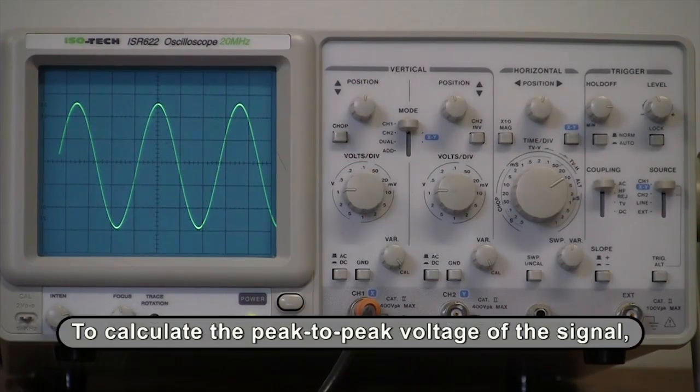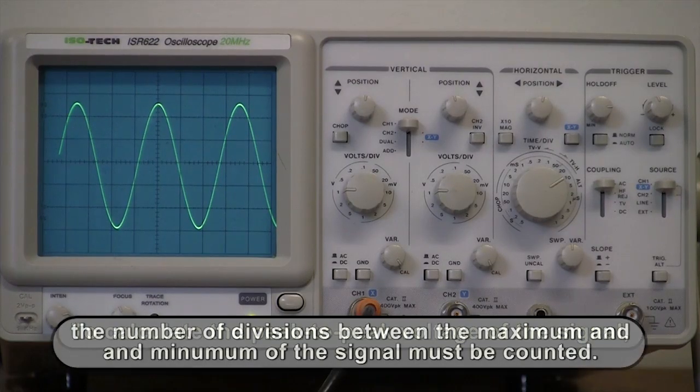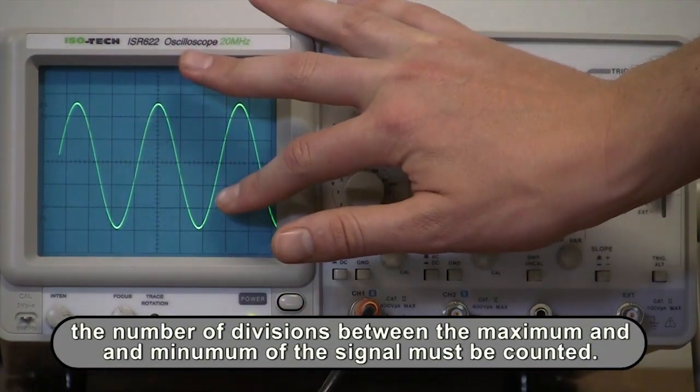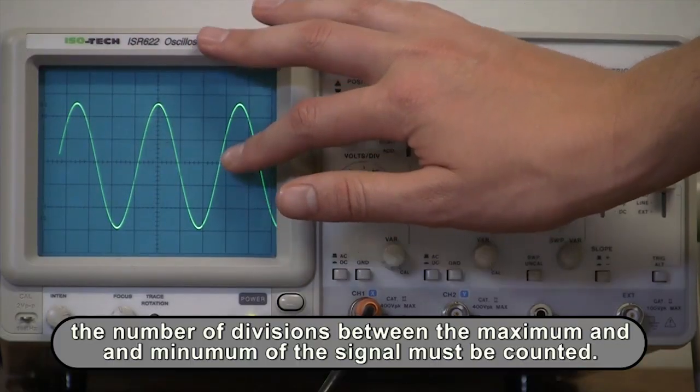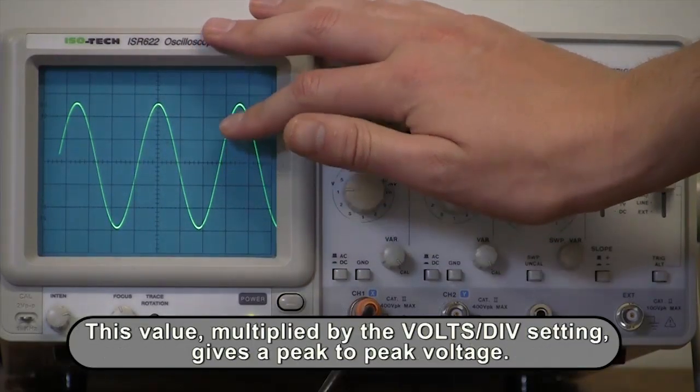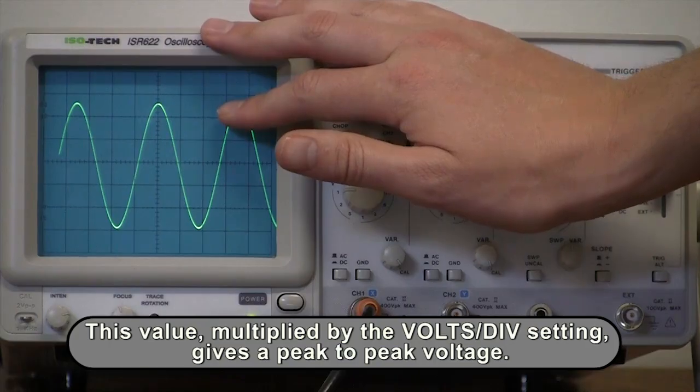To calculate the peak-to-peak voltage of the signal, the number of divisions between the maximum and minimum of the signal must be counted. This value multiplied by the volts per division setting gives a peak-to-peak voltage.